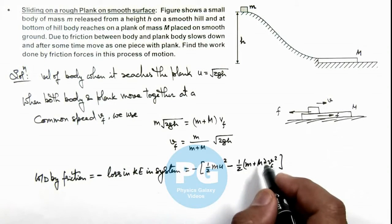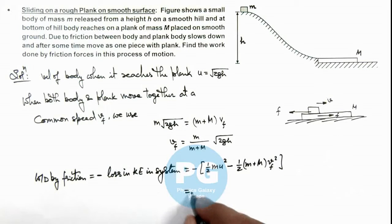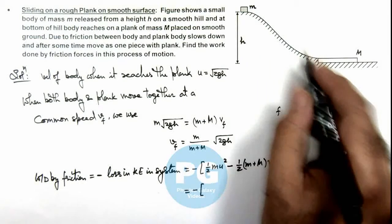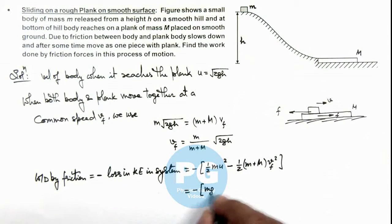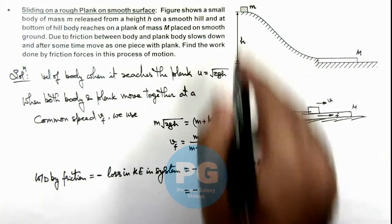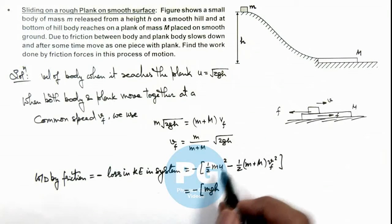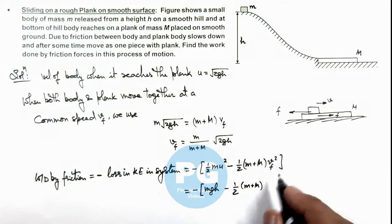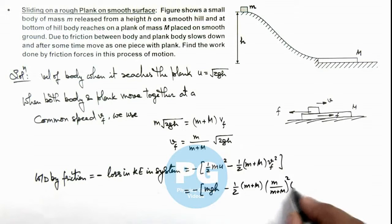So if we substitute the values here you can see this half m u square is the initial kinetic energy of the body which can be written as mgh as it is attained by the work done by gravity, or if we put u as root 2gh here. Minus this half m plus capital M multiplied by v final square here is m by m plus capital M whole square times 2gh.